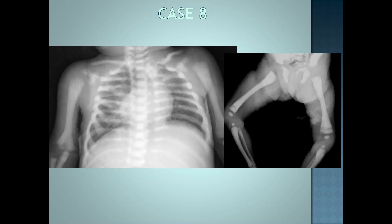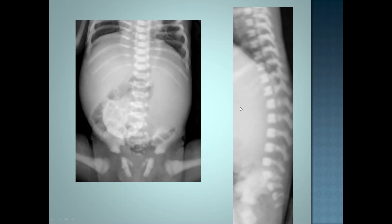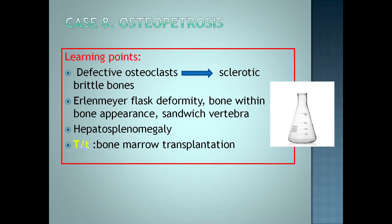This is the 8th case of a small child where there is diffuse abnormality in all the visualized bones. There is increased sclerosis and density of the ribs, spine, and long bones, with an Erlenmeyer flask deformity of the long bones — that is metaphyseal widening and undertubulation of the long bones. Abdominal radiograph shows hepatosplenomegaly. The spine has a typical sandwich vertebra appearance. This is a case of osteopetrosis — a condition characterized by defective osteoclasts, which leads to formation of sclerotic and brittle bones prone to fractures. Imaging-wise, there is Erlenmeyer flask deformity, bone-within-bone appearance, and sandwich vertebra. Clinically, there will be hepatosplenomegaly. Treatment is bone marrow transplantation.